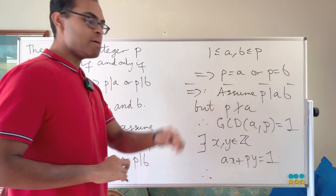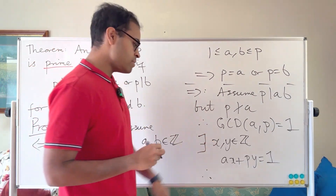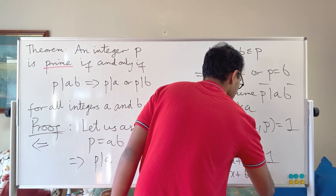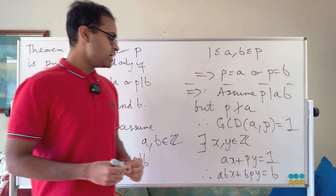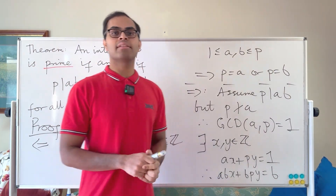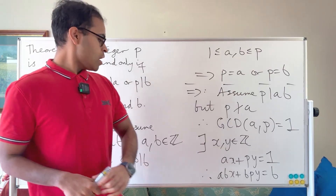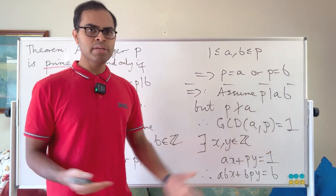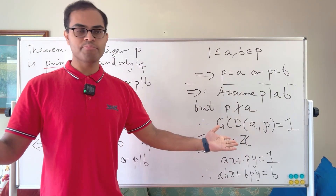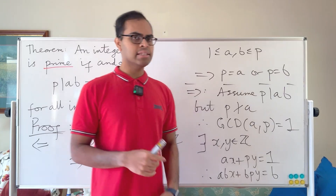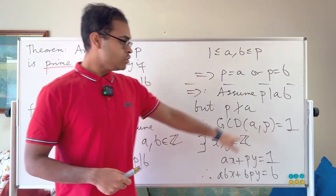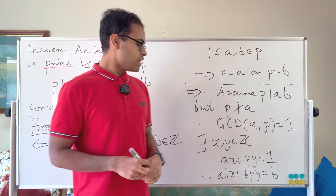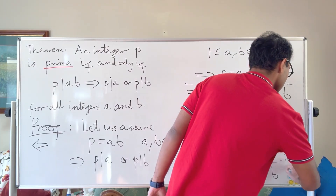Let's use this to establish our theorem. We know ax plus py equals 1, so we're going to multiply both sides by b, giving us abx plus bpy equals b. Now, p is a factor of the left-hand side: because p divides ab and p divides bpy (any multiple of p). The sum of two multiples of p is also a multiple of p. But that means p has to be a factor of the right-hand side, since the two sides are equal. Therefore p divides b — and that is our proof. We assumed p didn't divide a and showed that p divides b.